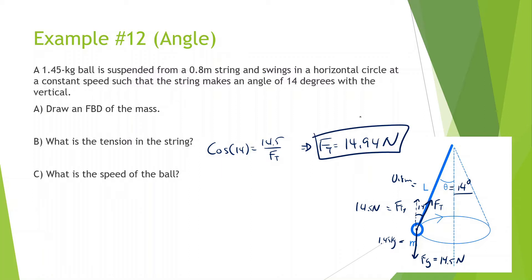Part B now says: what is the speed of the ball? As this thing is moving in a circle, there's going to be a force of tension in the x direction, and that's what's making it move in a circle. The force of tension in x equals the centripetal force. We can do 14.94 times sine of 14, and we get 3.62 newtons.